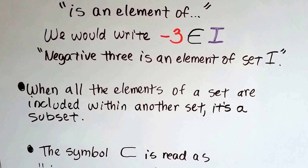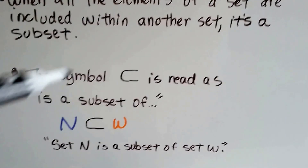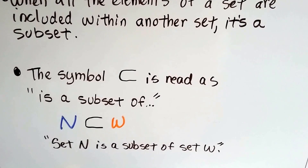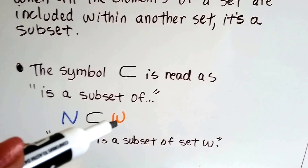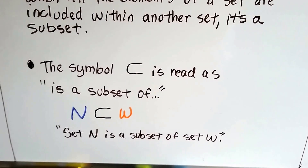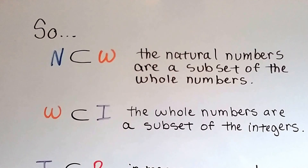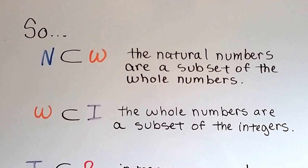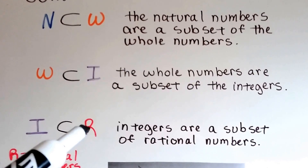When all the elements of a set are included within another set, it's a subset. This symbol — it's kind of like a C, except it's longer and stretched — is read as 'is a subset of.' So we could say N, the natural numbers, is a subset of W. N is a subset of W — the natural numbers are a subset of the whole numbers. And W is a subset of I — the whole numbers are a subset of the integers. And I is a subset of R.